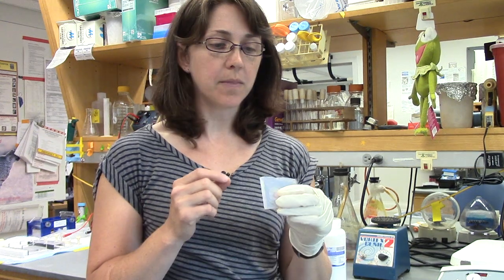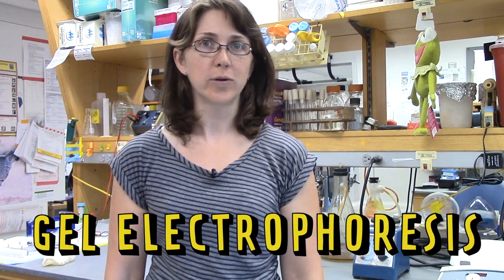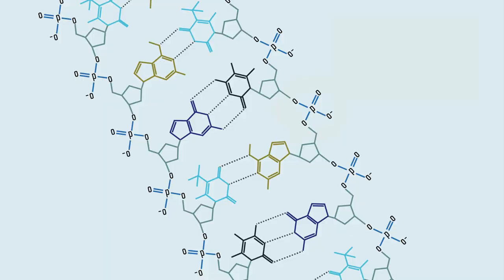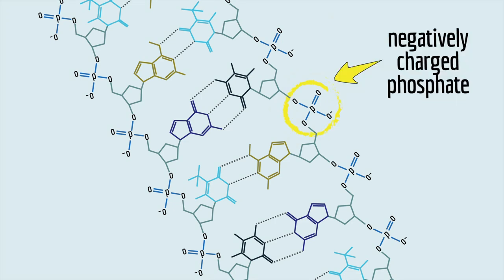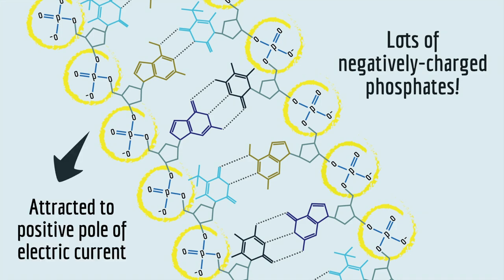But unlike jello, this gel has holes that are just the right size for DNA molecules to snake through. The problem is, unlike my yarn example, we can't use gravity to pull the DNA through the gel. We use instead an electric current. That's the electrophoresis part of gel electrophoresis. An electric current pulls the DNA through the gel, because DNA has this big, negatively charged phosphate on it, which makes it attracted to the positively charged pole in an electric current.